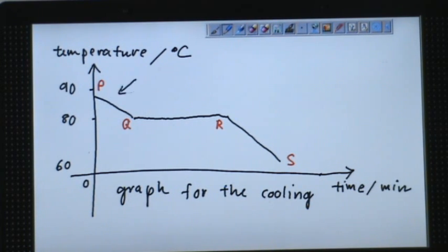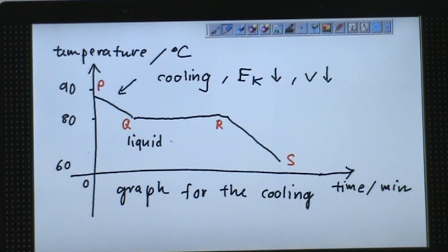The region PQ suggests the cooling process where the temperature drops from 90 degrees to 80 degrees. Obviously the kinetic energy has become less. They move about with less speed. So when they reach Q, this is a time when liquid will try to transform itself to solid. This is a region of solidification, a mixture of liquid and solid.